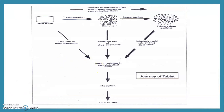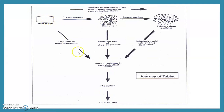The journey of a tablet: the intact tablet is formed from primary drug particles. These particles form granules, which are relatively rapid in drug dissolution. Drug in solution goes to the GIT fluid, is absorbed, and enters the blood. Granules may degrade into primary drug particles or be directly dissolved and absorbed into GIT fluids, then enter the blood. Alternatively, the intact tablet undergoes slower drug dissolution, followed by drug entering GIT fluid, absorption, and reaching the blood.